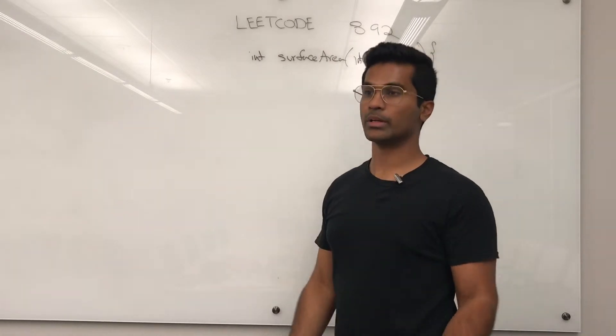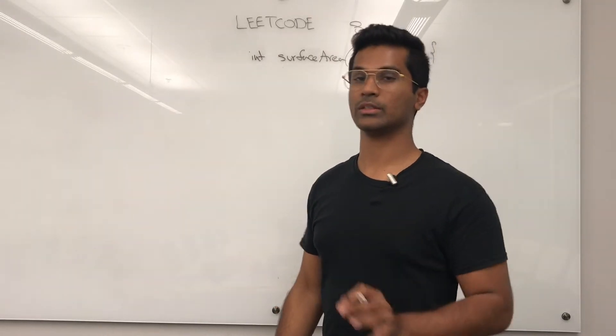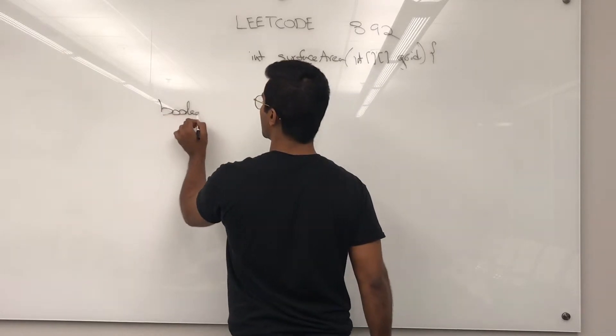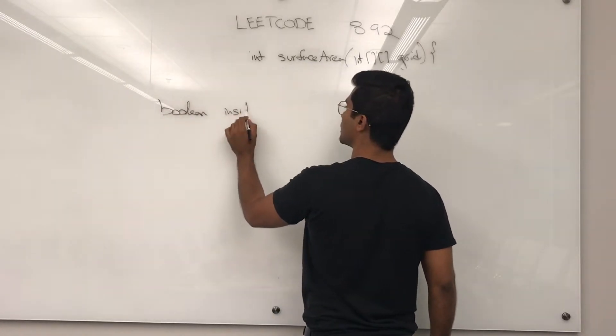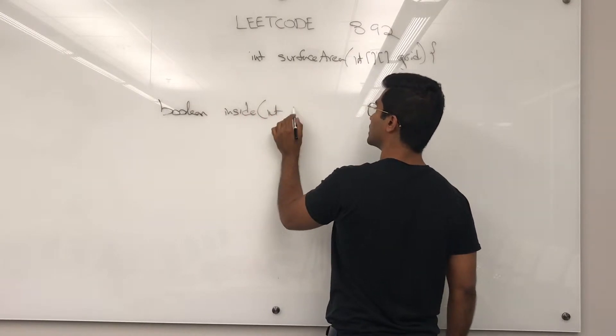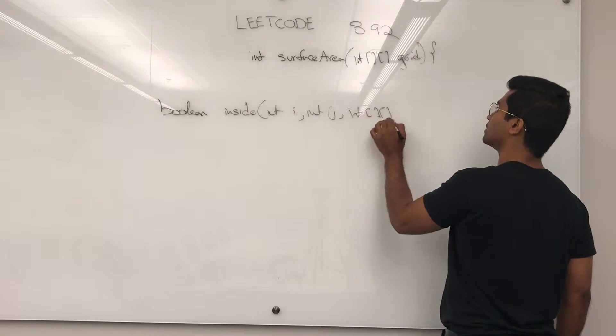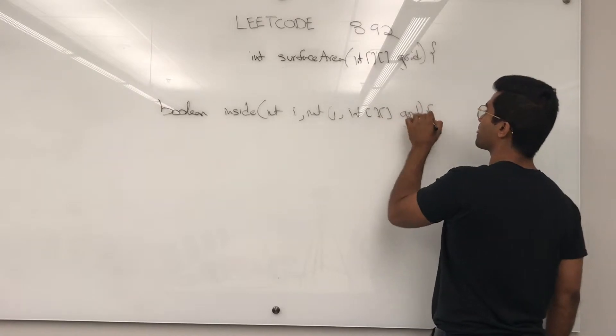Anytime we're doing a 2D grid, we want to make use of a helper method called inside so we know we're not out of bounds. So that's going to look like boolean inside int i, int j, 2D grid of like that.